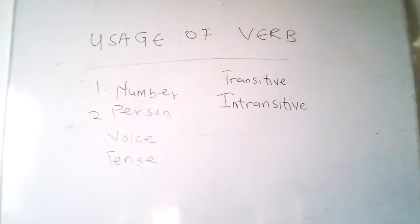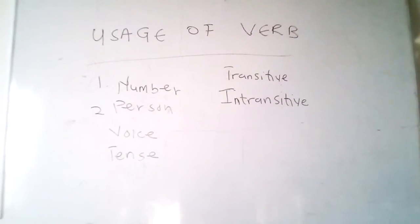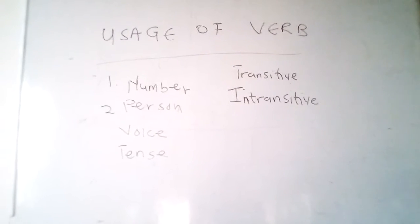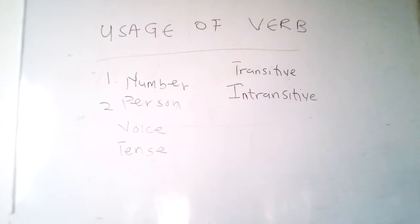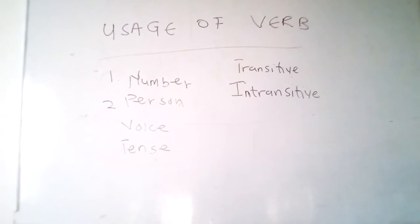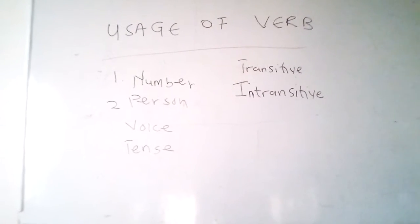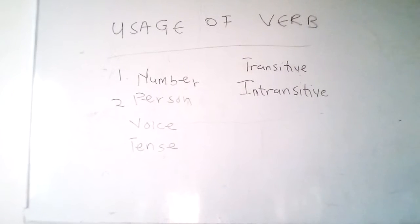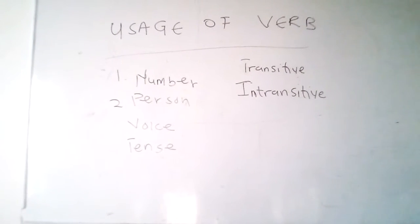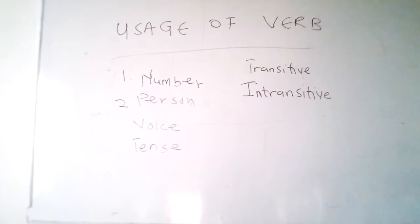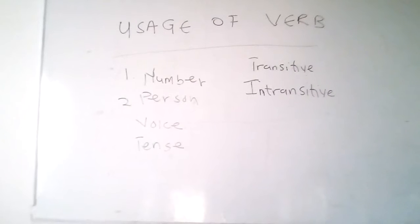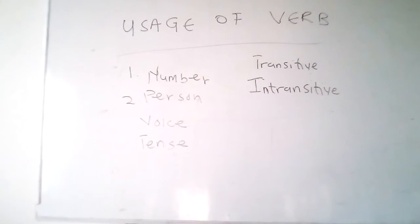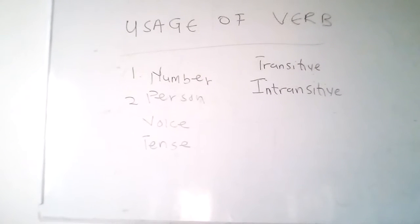Regarding voice, we have active voice and passive voice. An active voice indicates that the subject of the verb is acting or in action. A verb is in the active voice when the subject performs the action of the verb. Simply put, when the subject of a sentence represents the doer of the action, the verb is said to be in the form of an active voice.